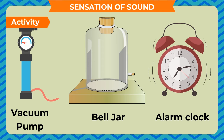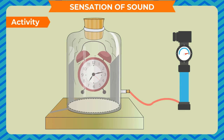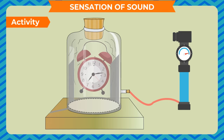To show that a medium is required for propagation of sound: place an alarm clock in a bell jar and connect a vacuum pump to it. Ring the alarm — you can hear it. Now remove all the air and repeat the alarm. You will not be able to hear it. This shows that sound requires a medium for propagation.